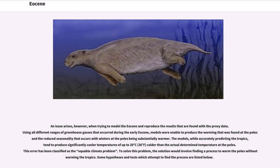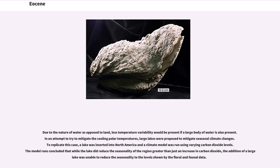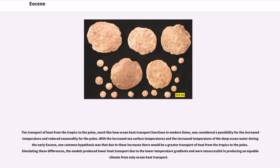To solve this problem, the solution would involve finding a process to warm the poles without warming the tropics. Due to the nature of water as opposed to land, less temperature variability would be present if a large body of water is also present. In an attempt to mitigate the cooling polar temperatures, large lakes were proposed to mitigate seasonal climate changes. To replicate this case, a lake was inserted into North America and a climate model was run using varying carbon dioxide levels. The model runs concluded that while the lake did reduce the seasonality of the region greater than just an increase in carbon dioxide, the addition of a large lake was unable to reduce the seasonality to the levels shown by the floral and faunal data.